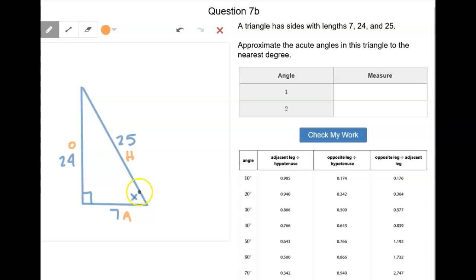So if I wanted to find this, I can either do the tangent, I can do the sine, or I can do the cosine. It just depends on what you like best. So we'll do the cosine.